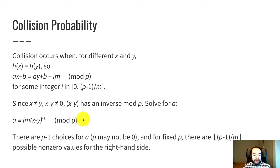Now, there are P minus one choices for A. Remember that A is an integer one through P minus 1, zero is excluded. So there are P minus one choices for A. And for a fixed I, there is that P minus one over M and take the floor. That's the possible non-zero values for the right-hand side.